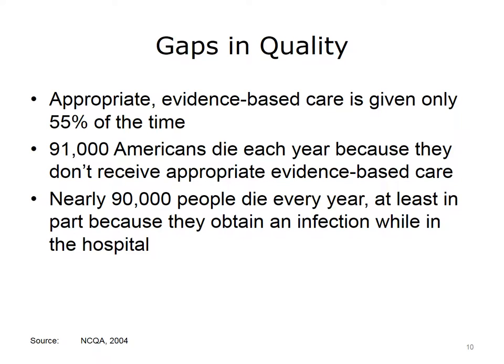These are some examples of the underuse, misuse, and overuse in our health care system that contributes to poor quality outcomes for patients and their families. According to the NCQA, evidence-based care was given only 55% of the time. And 91,000 Americans died each year because they didn't receive the appropriate evidence-based care. Over 100,000 patients were injured as a result of receiving inappropriate or wrong care. With these and other such statistics, it is clear health care quality outcomes in our industry are not as good as they should be and need substantive improvements.